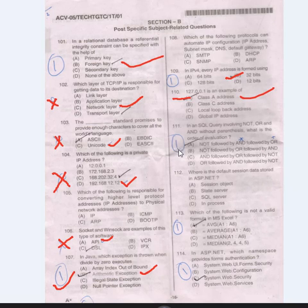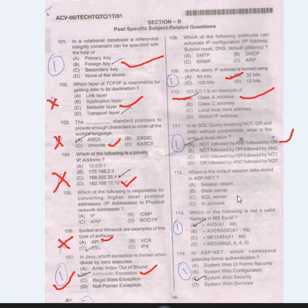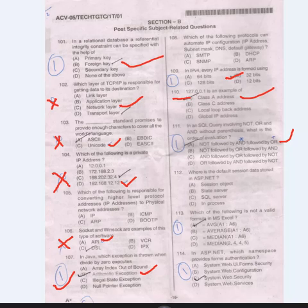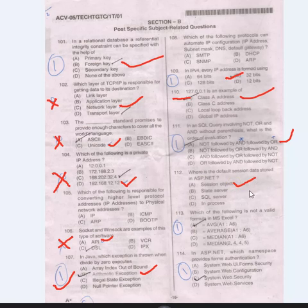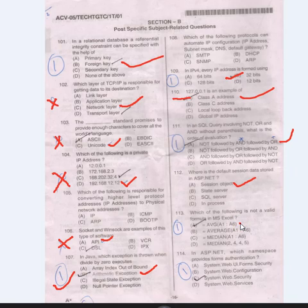Question 111: In an SQL query involving NOT, OR, and AND without parentheses, the order of evaluation is: NOT, followed by AND, followed by OR. Question 112: Where is the default session data stored in ASP.NET? That is the session object. Question 113: Which of the following is not a valid formula in MS Excel? That is =AVG(A1:A6).